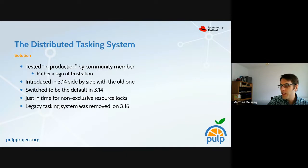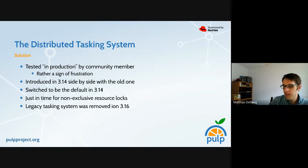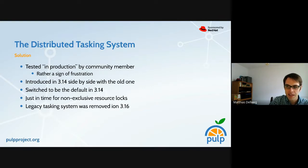One of the highlights of this tasking system is it was tested in production by a community member — though I say this is rather a sign of frustration with the legacy tasking system than a good thing to do. At some point we introduced the new tasking system with a pre-release version of Pulp, and we introduced it to live side-by-side with the old one because we wanted to be very careful not to break existing installations.